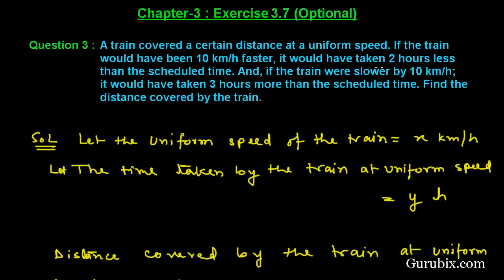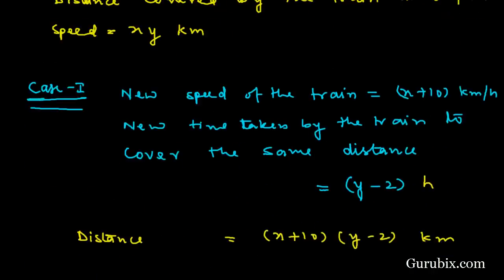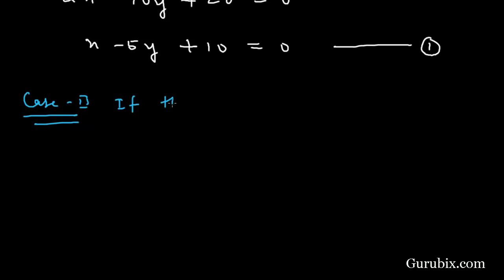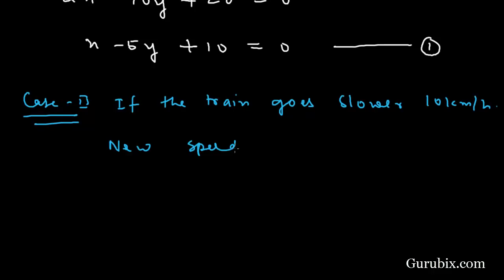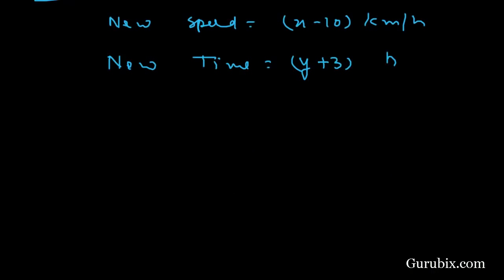Now we discuss Case 2: if the train were slower by 10 km per hour, it would have taken 3 hours more than the scheduled time. So the new speed is x minus 10 km per hour, and the new time is y plus 3 hours. Therefore, xy equals (x − 10) multiplied by (y + 3).